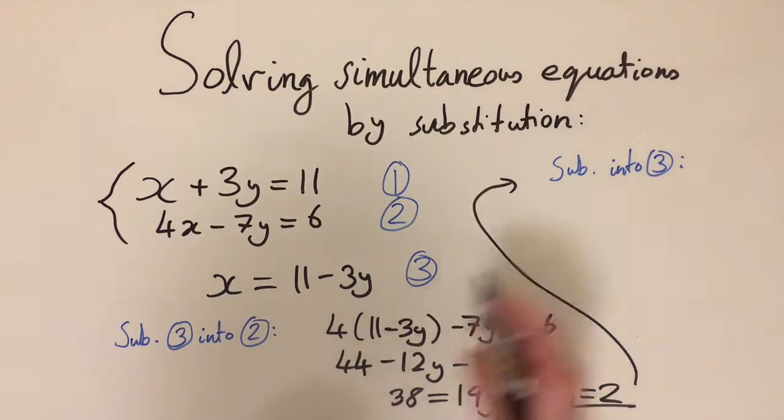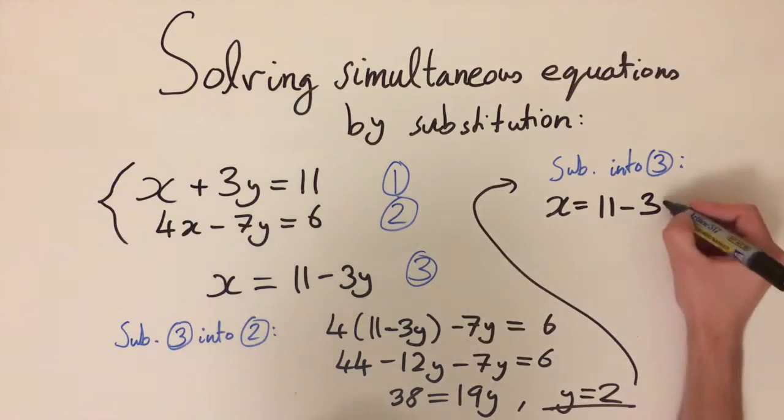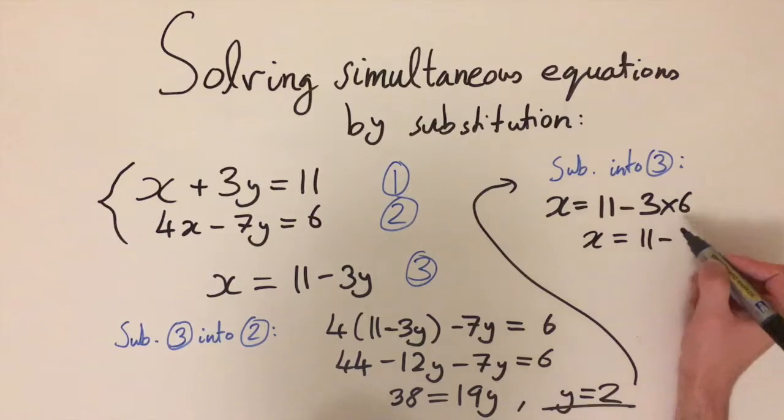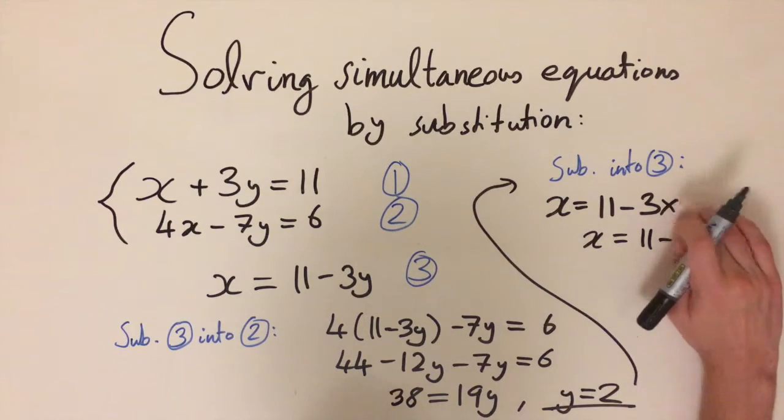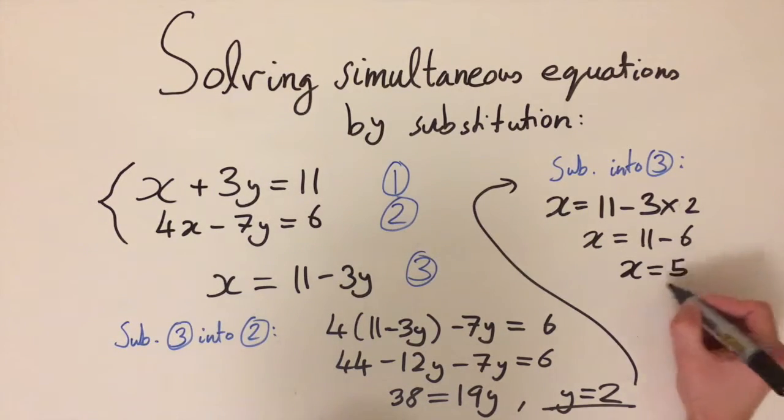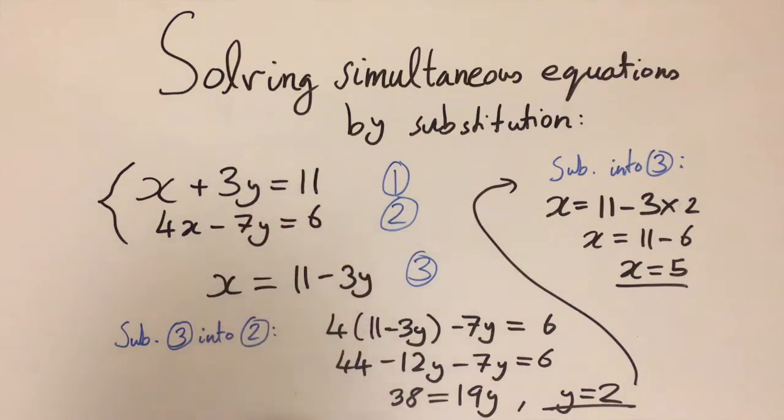If we do this we'll have x equals 11 minus 3 times y, and y is just 2, so we have x equals 11 minus 6 (3 times 2 is 6), so 11 minus 6, and we get x equals 5. So together, x equals 5 and y equals 2 forms the complete solution of this pair of simultaneous equations.